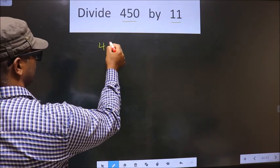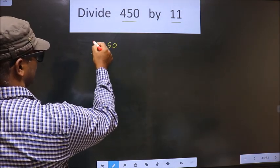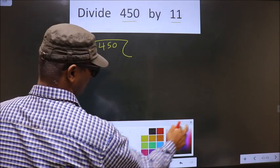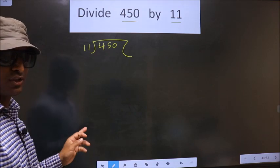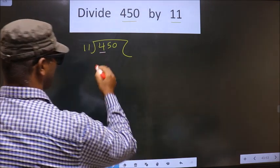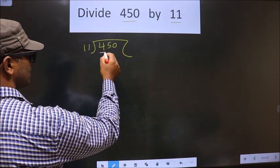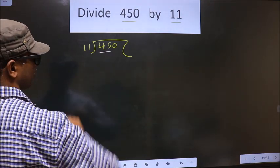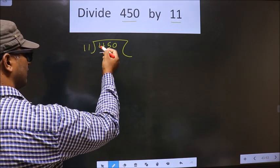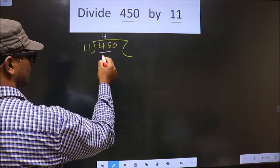That is 450 and 11 here. Okay. Next. Now, the first number is 4. 4 is smaller than 11, so we take two numbers, that is 45. Now, a number close to 45 in the 11 times table is 11 times 4 equals 44.